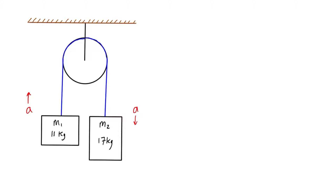Mass 1 is going to accelerate upward and mass 2 downward because it's heavier. To solve this problem, we're looking for the tension in the cable and the acceleration of each block. Each block will have the same magnitude of acceleration, just in opposite directions. Let's draw a free body diagram of each mass.